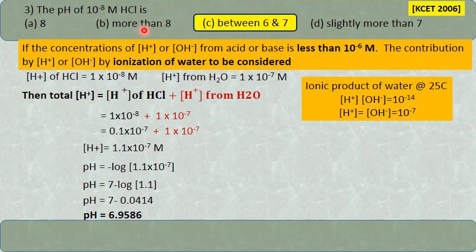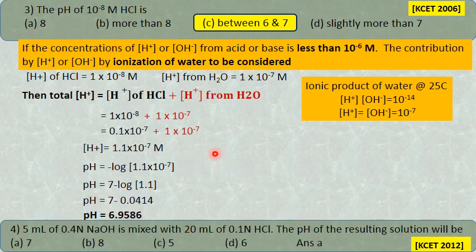The correct answer is approximately 6.96, not 8. You have to be very careful when the concentration of hydrogen or hydroxyl ion is less than 10⁻⁶. This is the clue and this is very important.